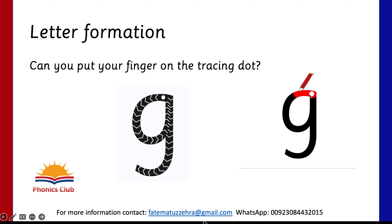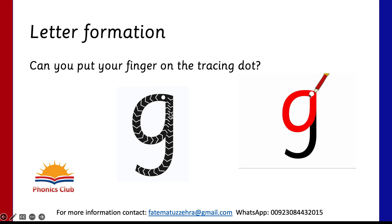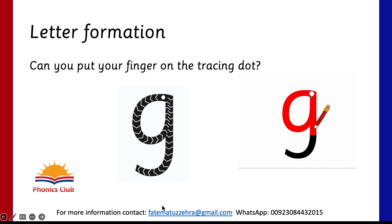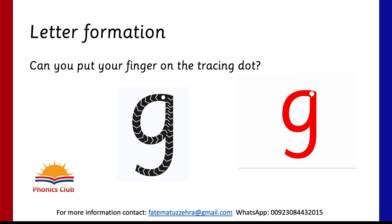Letter formation — always start from the dot and then go around. When children start letter formation, when they go to the downward movement, they will feel hesitant. They can do activities with fingers using up-down movement. Sometimes they incorrectly form a circle and then a line. It's important to know that finger flow is very important. At this age, we don't write in a copy or on lines because the finger muscles are not fully developed.